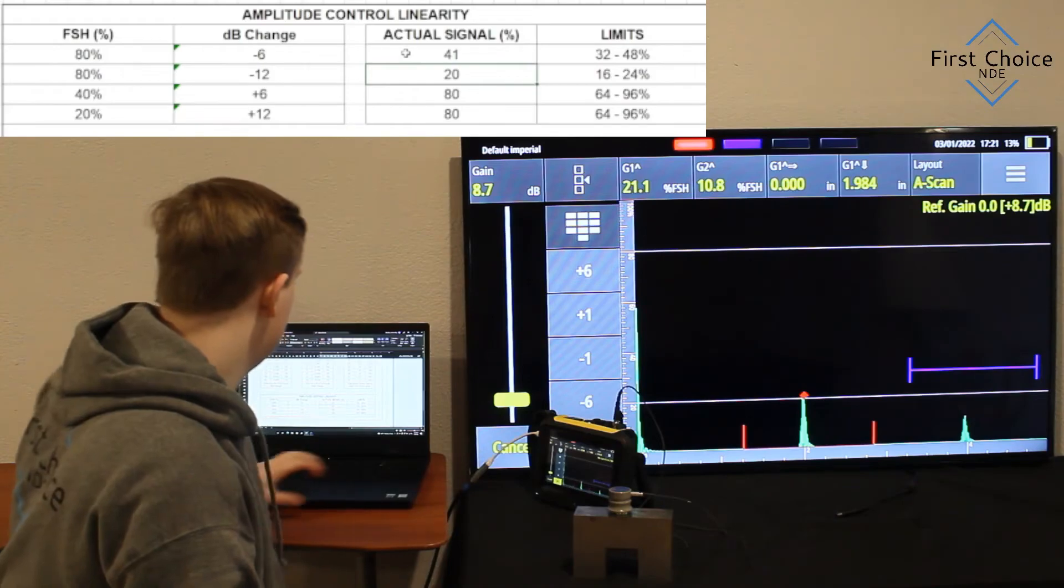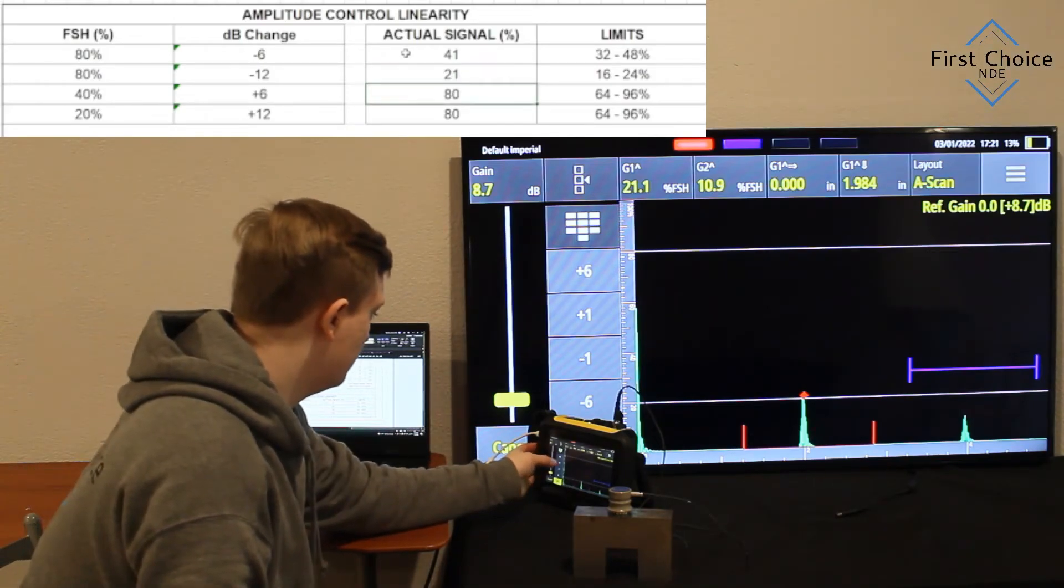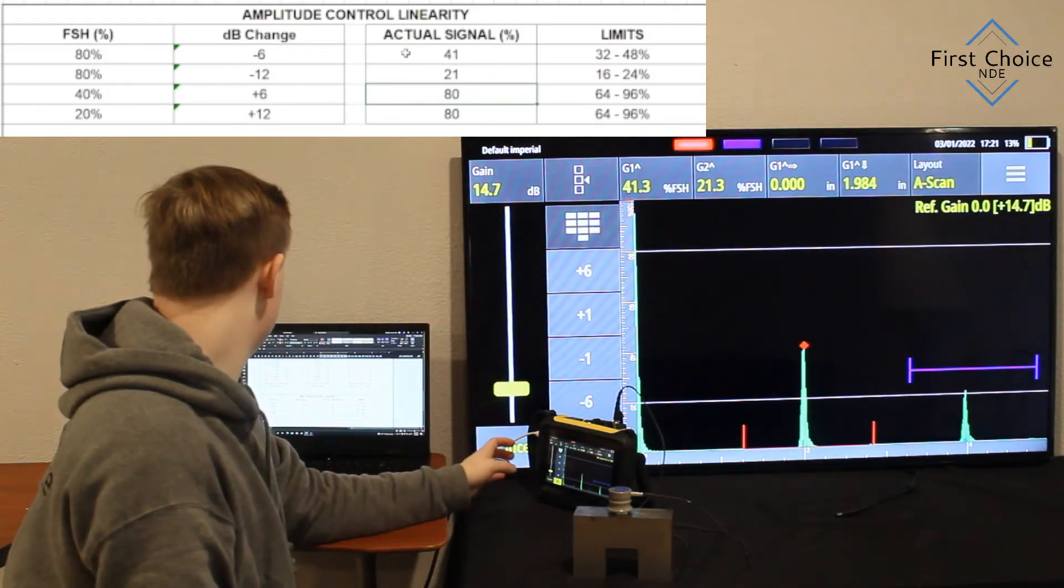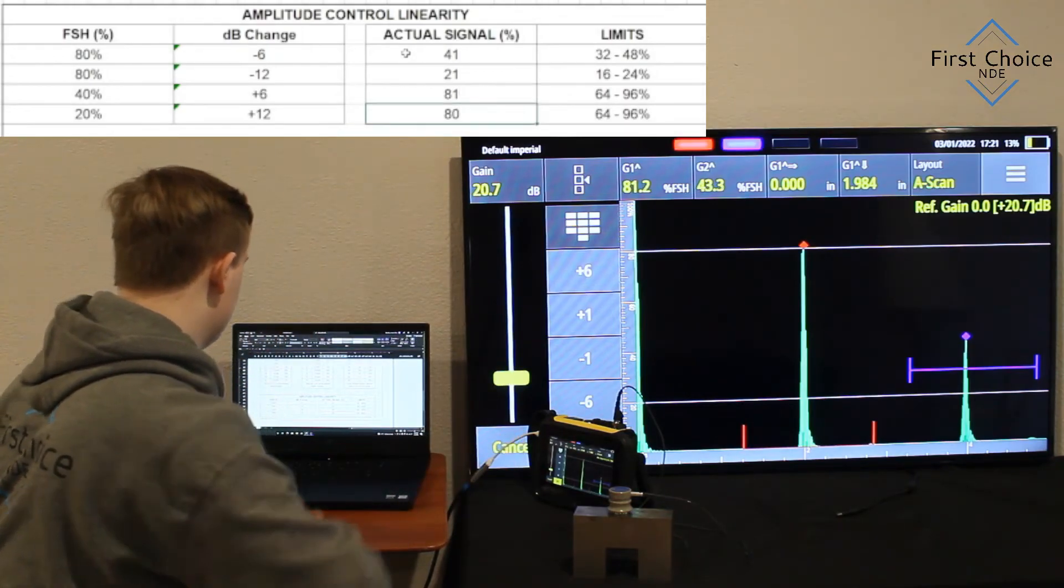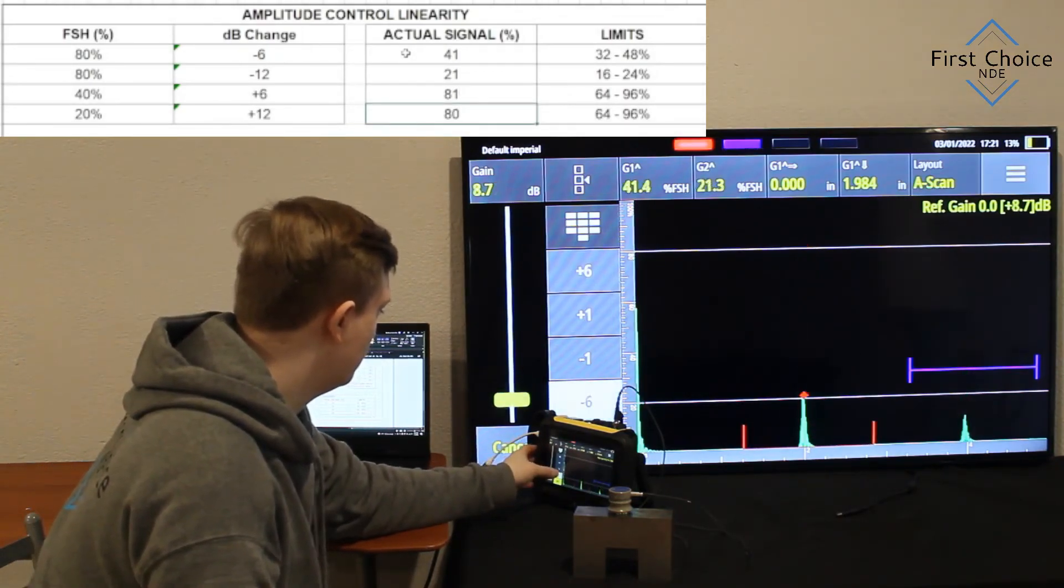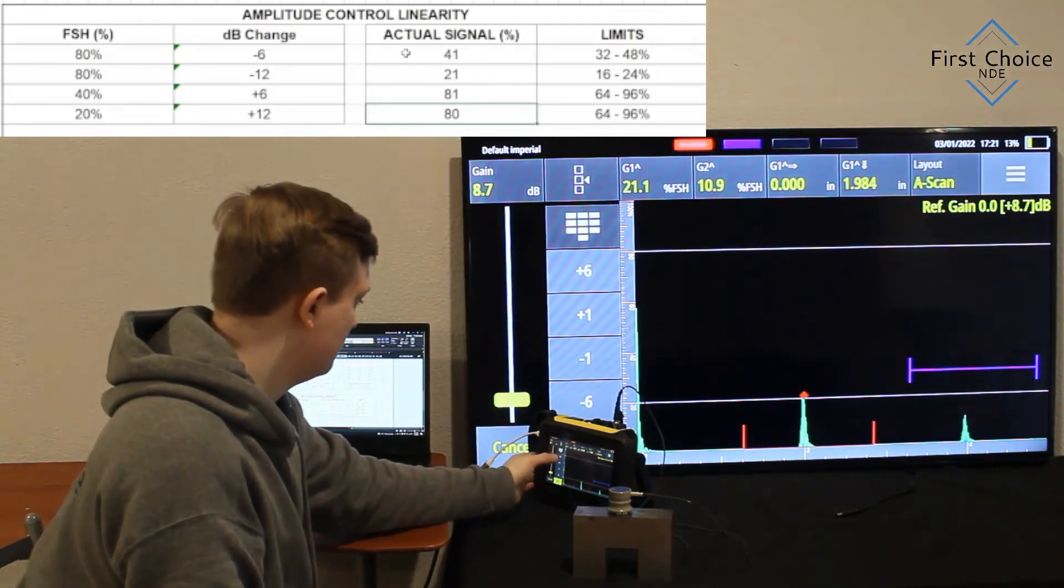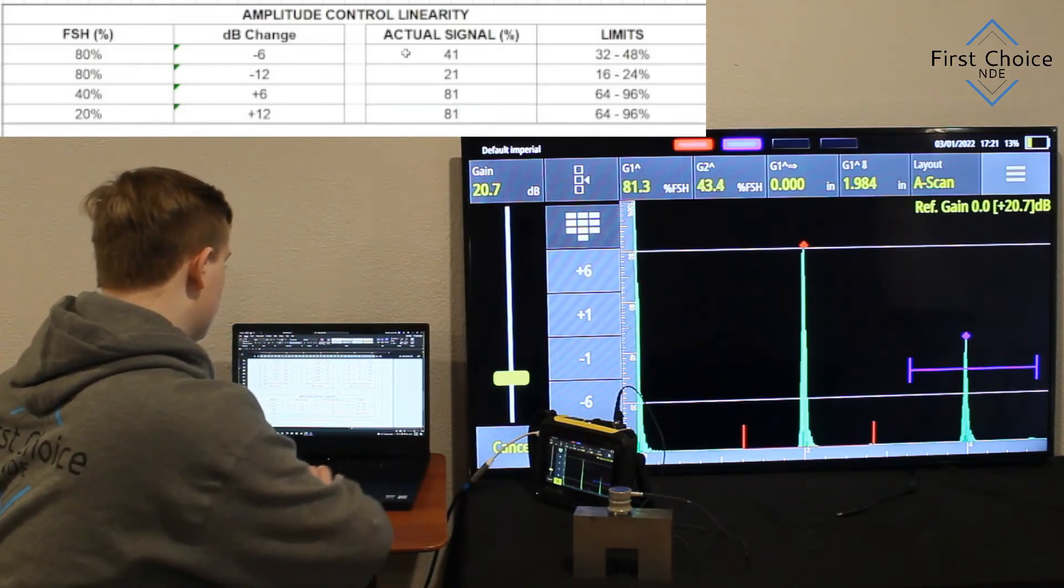Alright, so we go back to 80, and we drop it 12 dB, which will go 40 to 20. And ours is 21, so 1 dB off. So now we go start at 40% screen height, raise it 6 dB, and that should bring us to 80. We're at 81. Alright, now you start at 20%, and you're going to add 12 dB, which should bring you to 80%, and ours is 81.